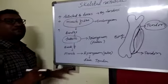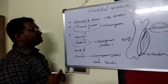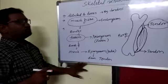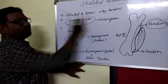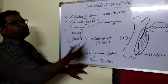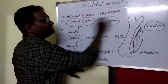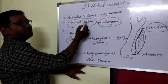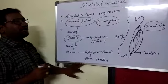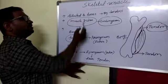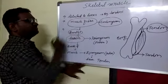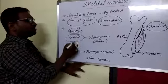Now, how is skeletal muscle structured? The basic unit of muscular tissue is the muscle fiber. Each individual muscle fiber is covered by a connective tissue called endomysium. These muscle fibers together form bundles, and these bundles are called fascicles.